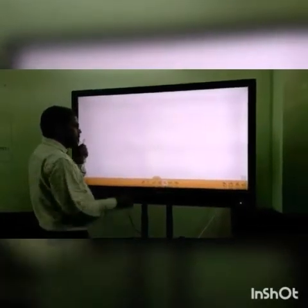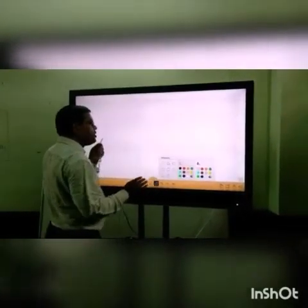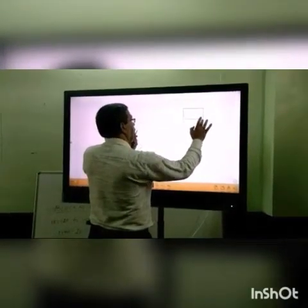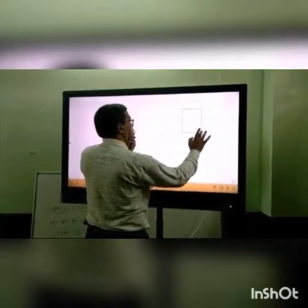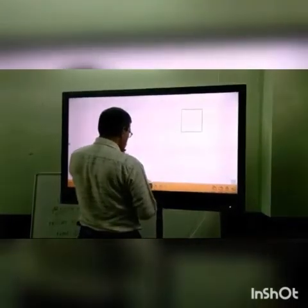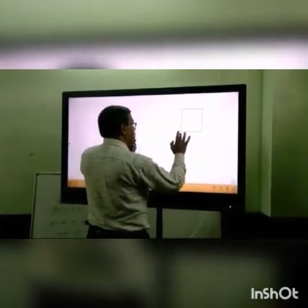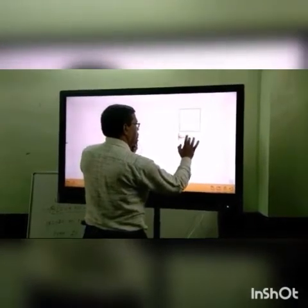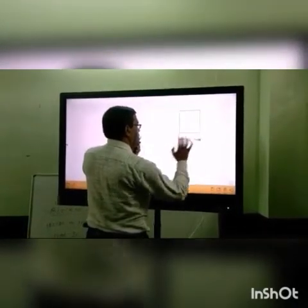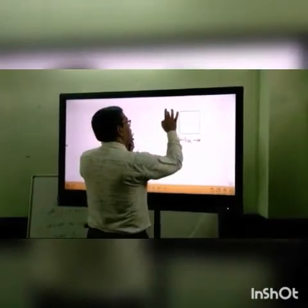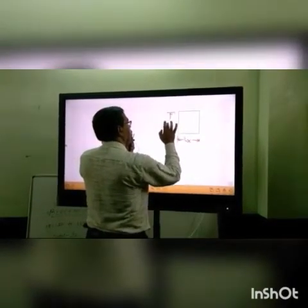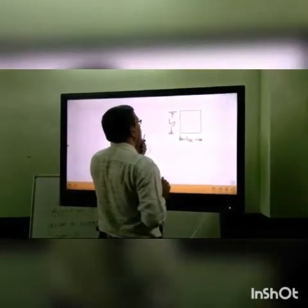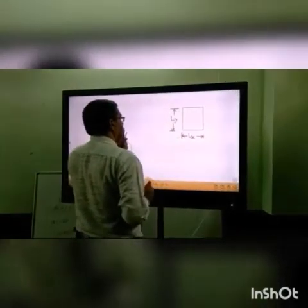In two-way slab, basically, if we draw a sketch of two-way slab, it looks like a rectangle where, if you see the span, there is one span denoted as LX, that is shorter span, and there is another span denoted as LY, which is a longer span.